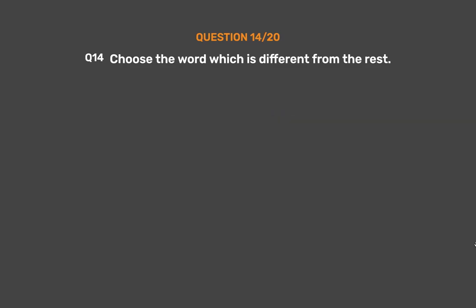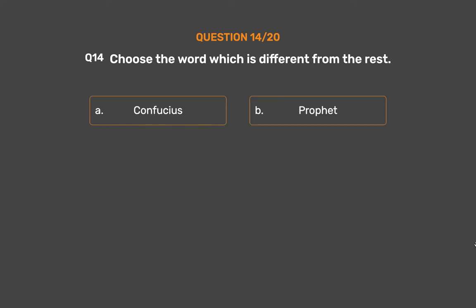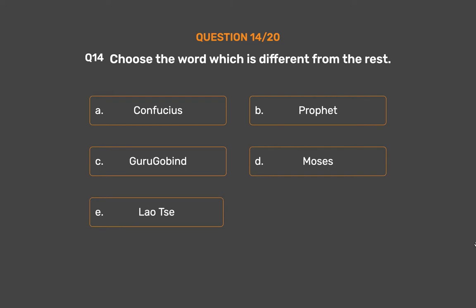Question number 14. Choose the word which is different from the rest. Option A: Confucius. Option B: Prophet. Option C: Guru Gobind. Option D: Moses. Option E: Lao Tse.